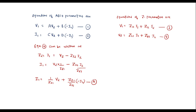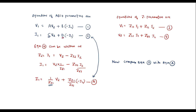Now compare equation 2 with equation A. We can observe that C is nothing but 1/Z21, and D is nothing but Z22/Z21. That is, C equals 1/Z21 and D equals Z22/Z21. Thus we have expressed C and D parameters in terms of Z parameters.